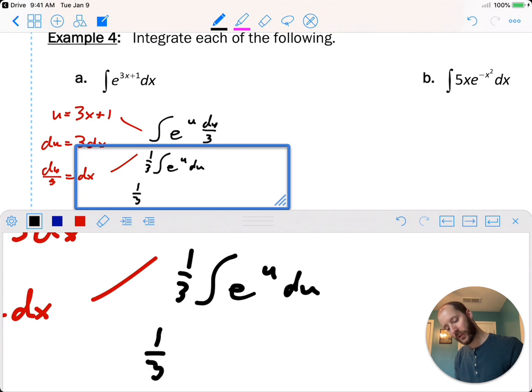We have 1 third e to the 3x plus 1. And of course, plus c.